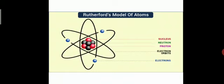From this, Rutherford proposed his model like a solar system — he considered the nucleus as the sun and the electrons as the planets revolving around it. However, there were some drawbacks to this model.